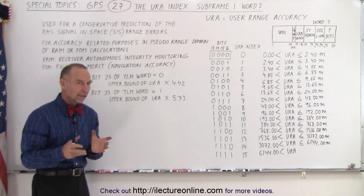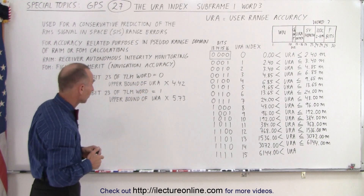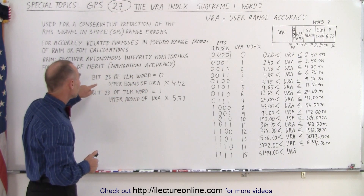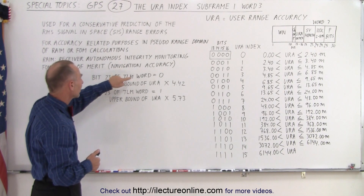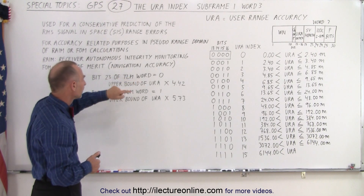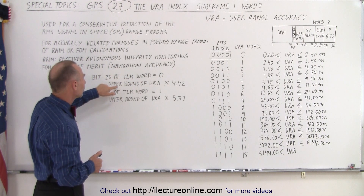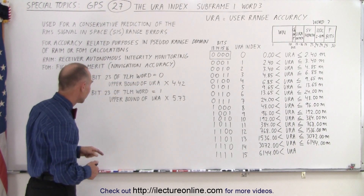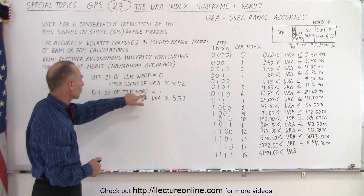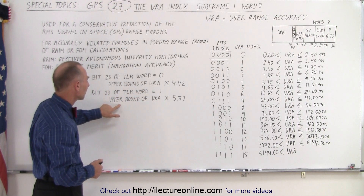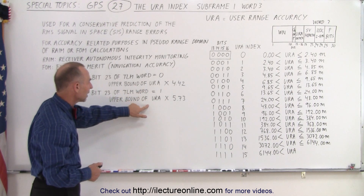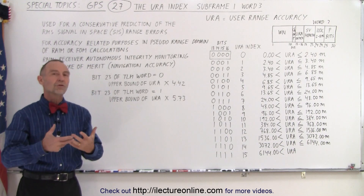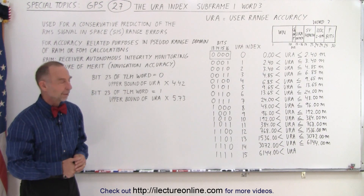When you get that URA index as a combination of those four bits, you take bit 23 of the TLM word, and that gives you an upper bound of URA multiplied times 4.42. If bit 23 of the TLM word is set equal to 1, then you take the upper bound of URA and multiply it times 5.73. That's then the number you will use in your calculation — that's where that comes from.